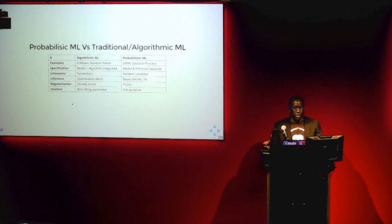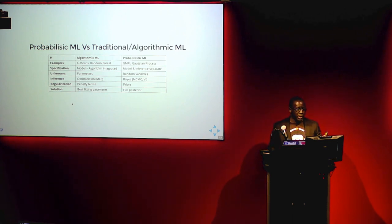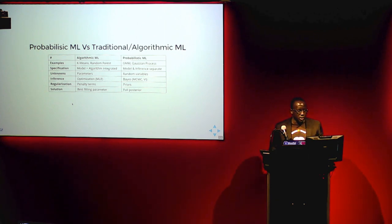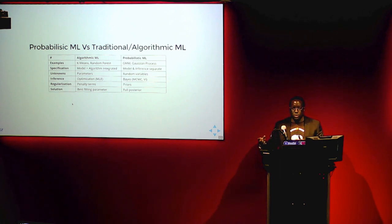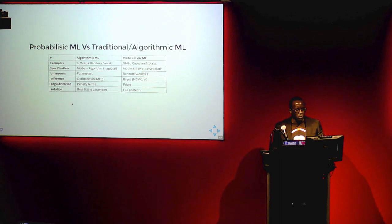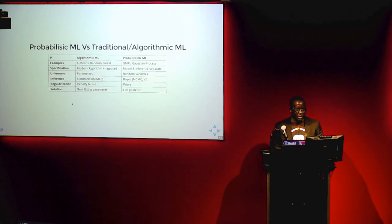For regularization — penalizing parameters inconsistent with the system — the algorithmic side defines penalty terms, while the probabilistic side uses priors to constrain parameters. The last differentiating factor is the solutions obtained. The traditional side gives a single best-fit value that maximizes the probability of observing the data, whereas the probabilistic side gives a full posterior distribution over parameters and predicted quantities. That is the key difference.